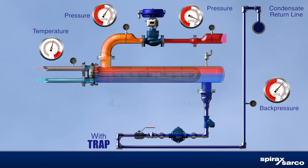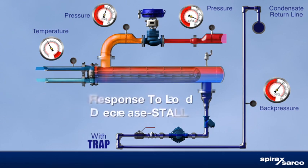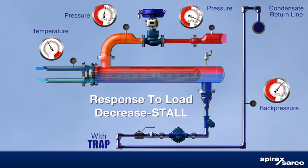This happens in all heat exchangers, whether properly sized or oversized. This causes condensate to flood the steam space, known as heat exchanger stall. In other words, the pressure in the heat exchanger is equal to, or less than, the total back pressure imposed on the steam trap, sometimes even attaining vacuum.